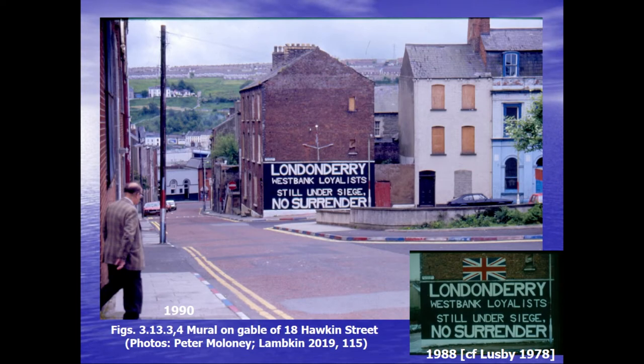We can take it back further, thanks to Peter Maloney's photographs — a huge collection relating to Derry that he's donated to Derry Museums and Derry Library. A big photograph is from 1990, showing it on the wall of number 18, Hawkins Street. An earlier Maloney photograph from 1988 shows it was there with the Union Jack above it. So at some stage between 1988 and 1990, the Union Jack gets removed. Mark Lusby also has a photograph of it at that location in 1978.